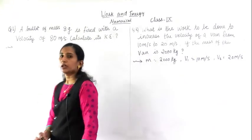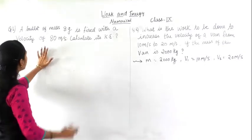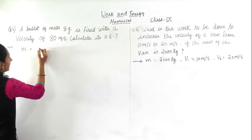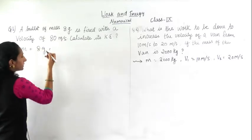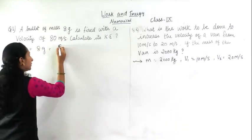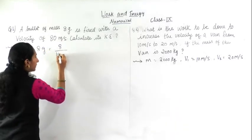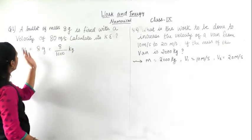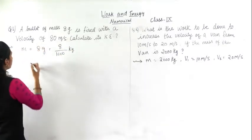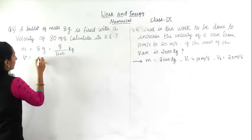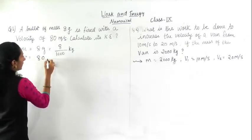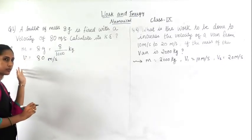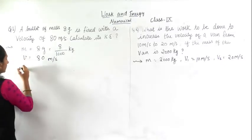First we will write the given things. Mass is given: m equal to 8 gram. We have to convert this into kg — 8 divided by 1000 — so it becomes kg. Velocity is given: v equal to 80 meter per second. So mass is given and velocity is given; you can find the kinetic energy.